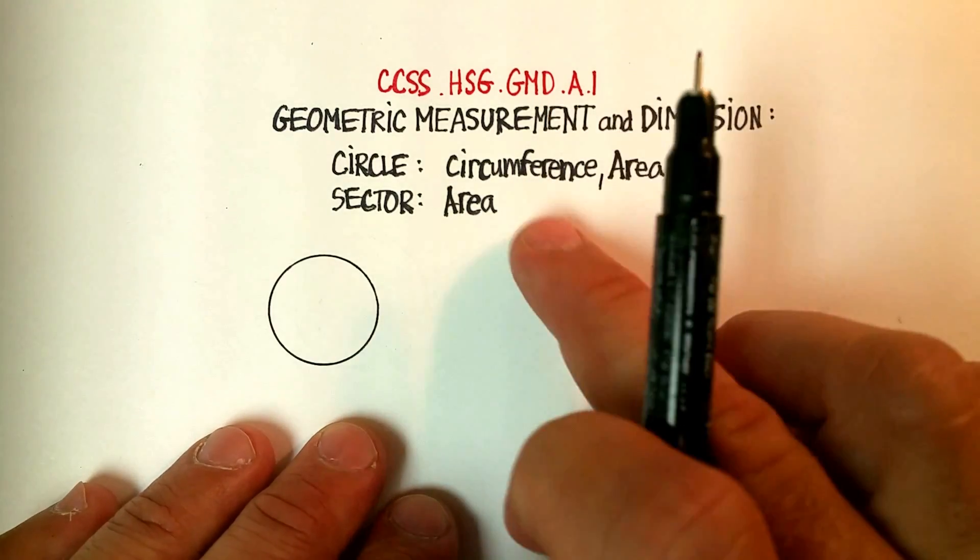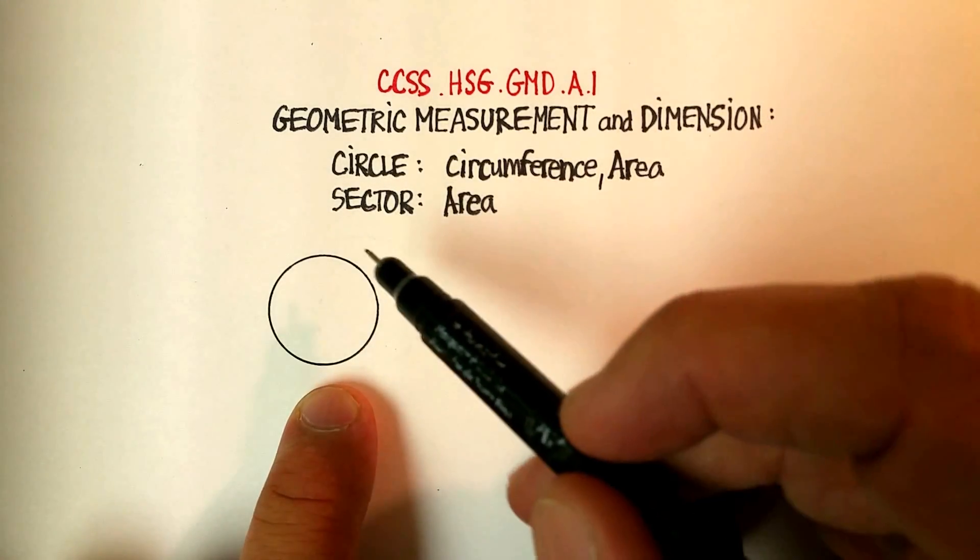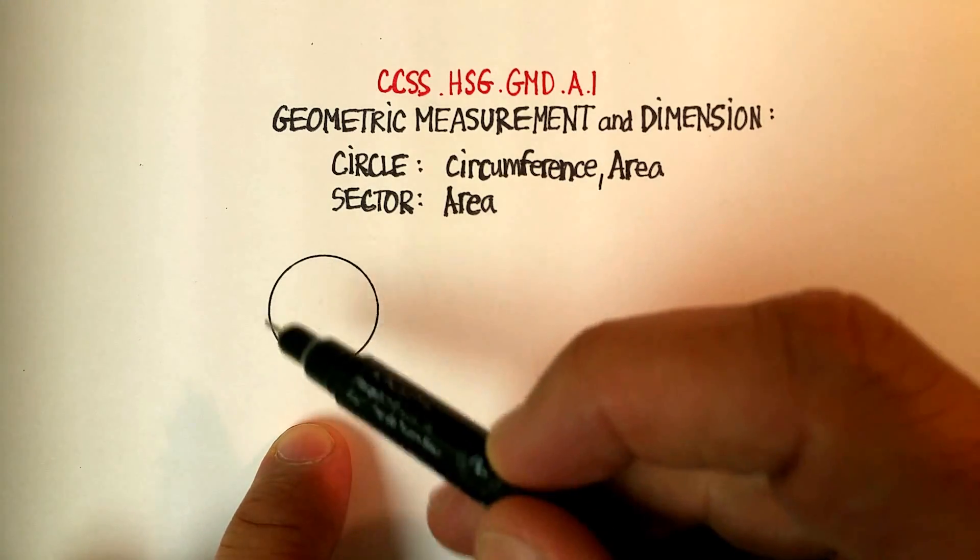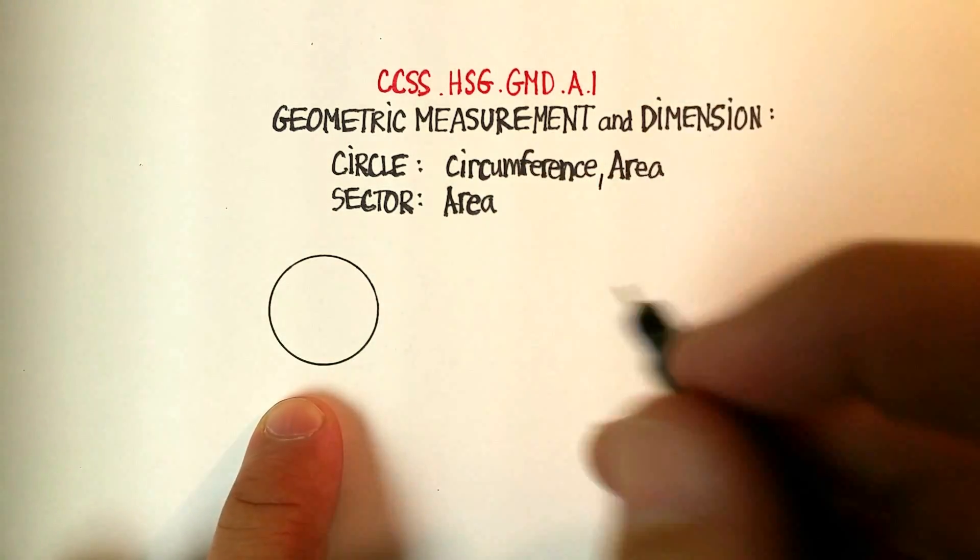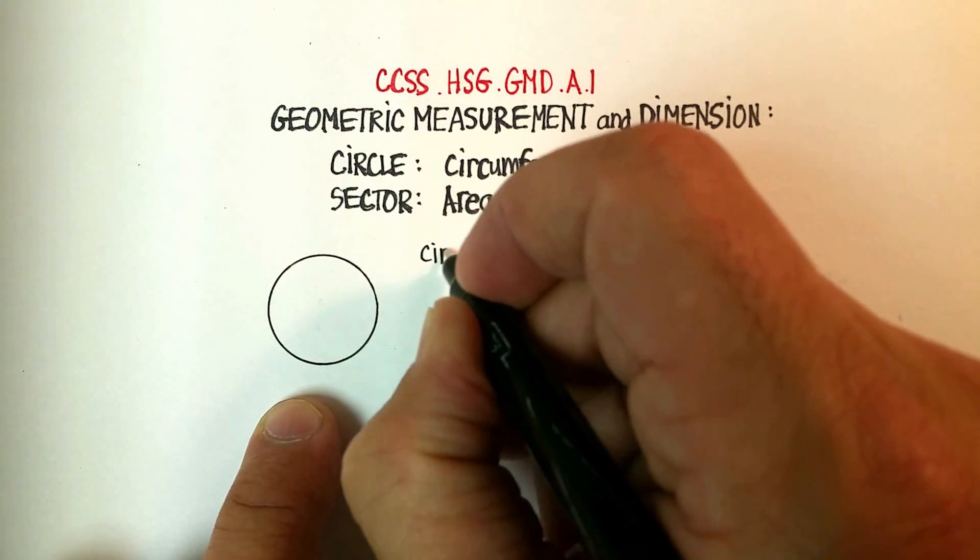So let's start with the circumference of a circle. The circumference of a circle is simply the distance around the edge of a circle. So the actual distance, and that's a pretty straightforward formula.